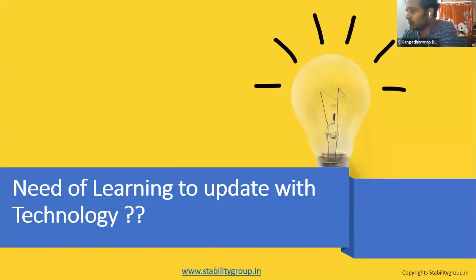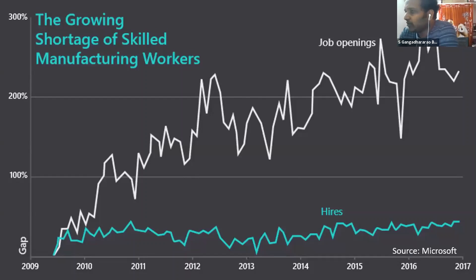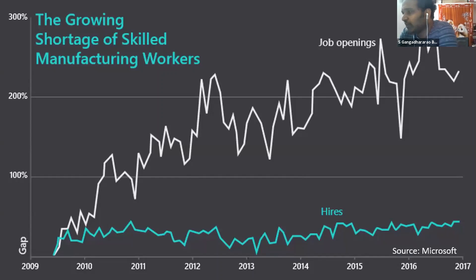I'll show interesting insights from Microsoft. Looking at job openings in the market, you can see the number of openings sometimes reaching a 300 percent gap — that means there are openings but people are not ready with the skills. On average, there's a 150 to 200 percent gap in hiring. If you are updated with technology, tools, and skills, you can get jobs and give guidance to management to make corrective decisions.